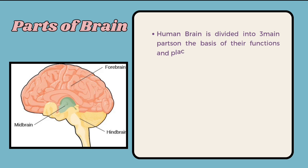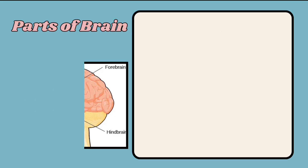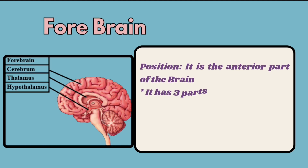The human brain is divided into three main parts on the basis of their functions and placement. The three main parts of the human brain are: first, the forebrain; second, the midbrain; and third, the hindbrain.